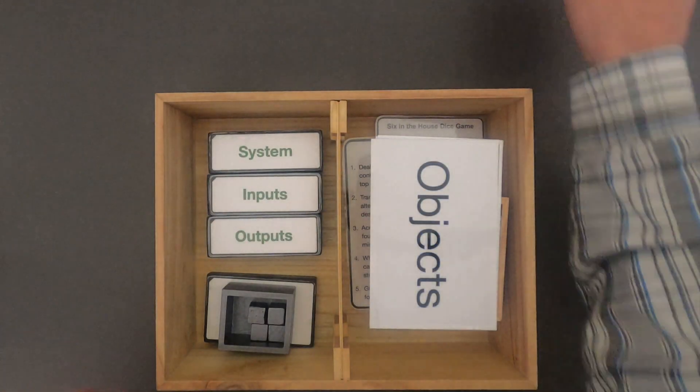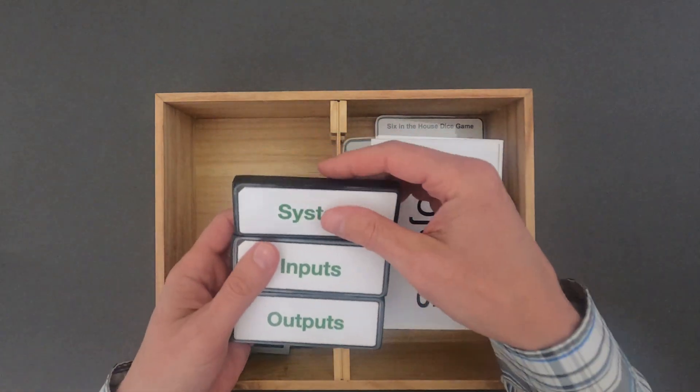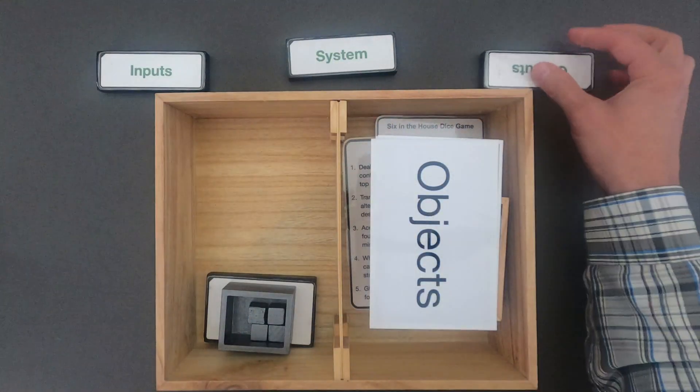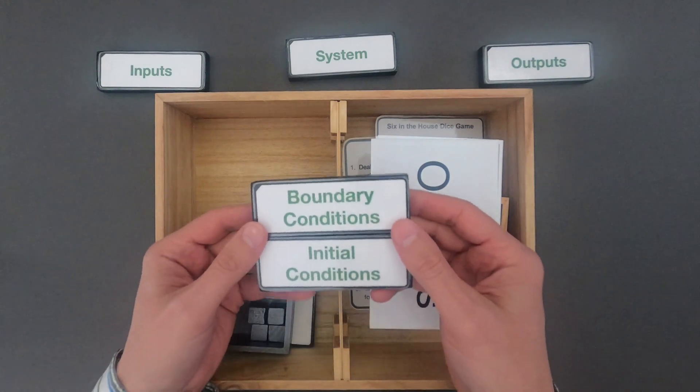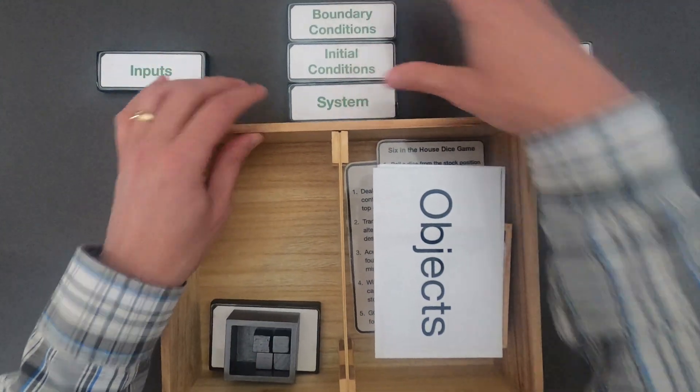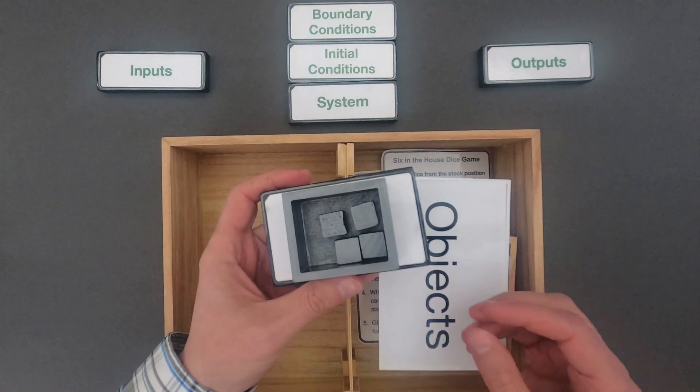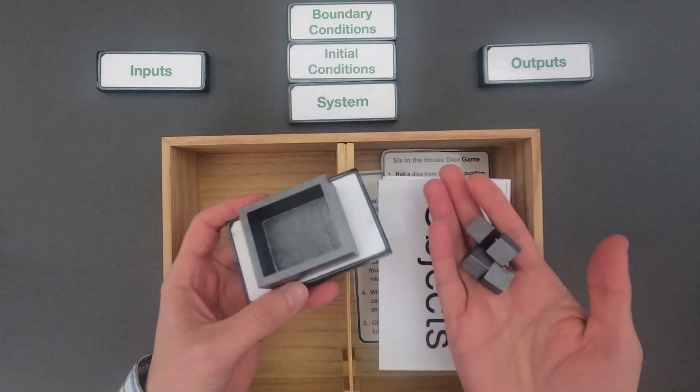We're going to be tracking what comes in and out of a system. So if you haven't watched the video on inputs, outputs, and processes, you might want to do that. We're going to be tracking inputs and outputs of a system. And also we're going to start with the system. What are the initial conditions and what are the boundary conditions? The object that represents systems is going to be this gray box with some components on the inside.